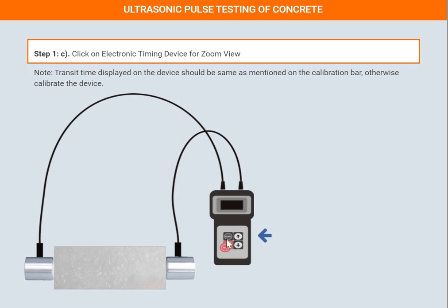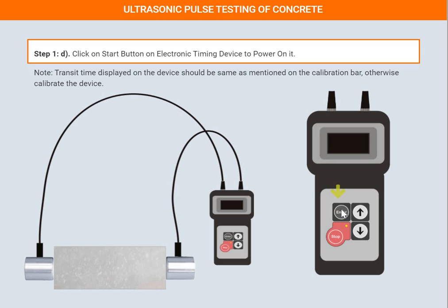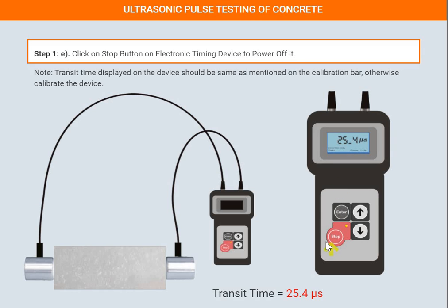Click the electronic timing device and enter the value. We get a time value of around 25.4 microseconds. The electronic timing device measures the time required for the pulse to travel from one end to the other — from the transmitter to the receiver. Mu (μ) is nothing but 10 to the power of minus 6.